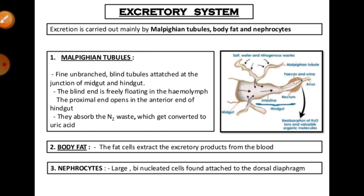Before being eliminated, there are epithelial lining structures especially in the rectum which reabsorb all the salts from the urine and transport them back into the hemolymph. The urine becomes nearly solidified and is eliminated along with the feces. They also have additional body parts for excretion: the fat body, nephrocytes, and the uricous gland. The fat cells excrete products from the blood, and nephrocytes are large binucleated cells found attached to the dorsal diaphragm, through which they secrete waste material from the cockroach's body.